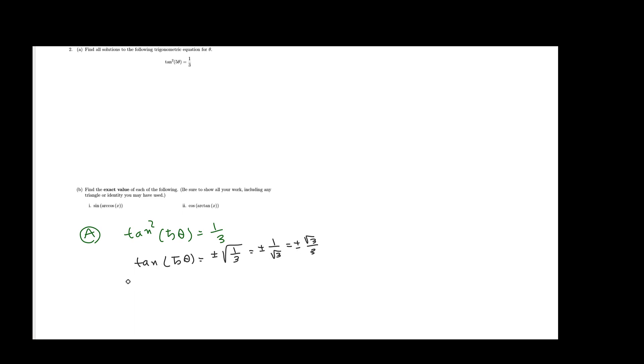Now that I know that two sets of solution exist, tan 5 theta equal to 1 over square root of 3, tan 5 theta equal to negative 1 over square root of 3. Let's solve for each, in each of these new equations, for theta.